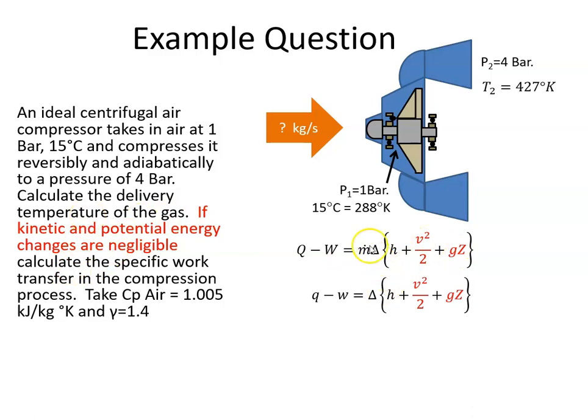And we're not given the mass flow rate, so we have to get the specific work. So that's the amount of work done per kilogram. We represent that by small w. So there's no heat, so that's zero. We neglect these two terms.